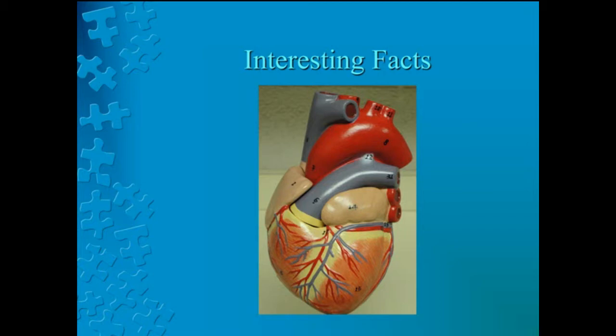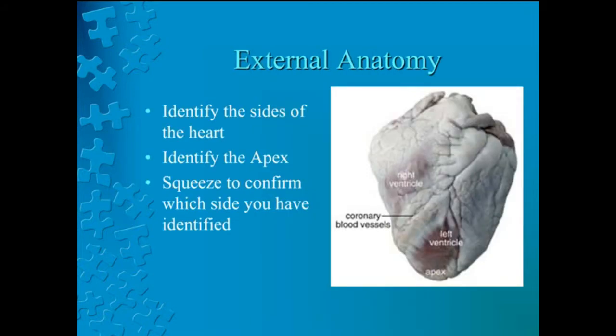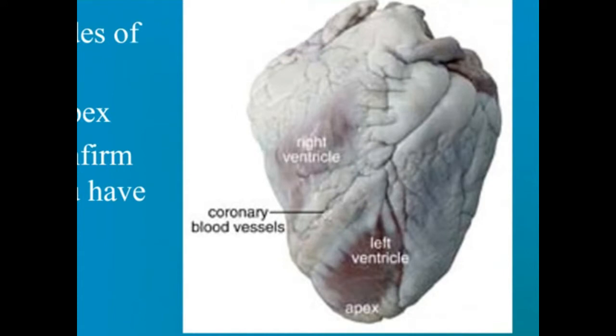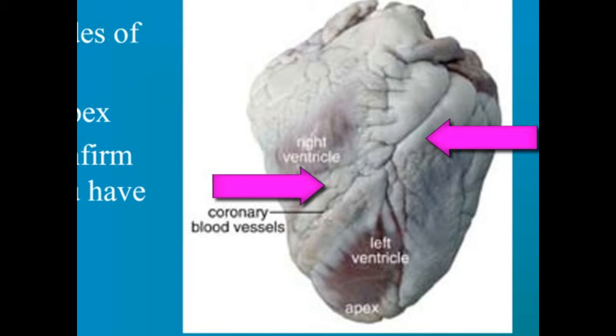Most heart diagrams show the left atrium and ventricle on the right side of the diagram. Imagine the heart in the body of a person facing you — the left side of their heart is on their left, but since you are facing them, it is on your right. Identify the right side of the heart from the left by using two references: the diagonal line of blood vessels that run on the surface of the heart, and the apex. The diagonal line provides a reference point to divide the heart into two sides. Additionally, the apex, or pointed end of the heart, will aid in identifying the halves as well.